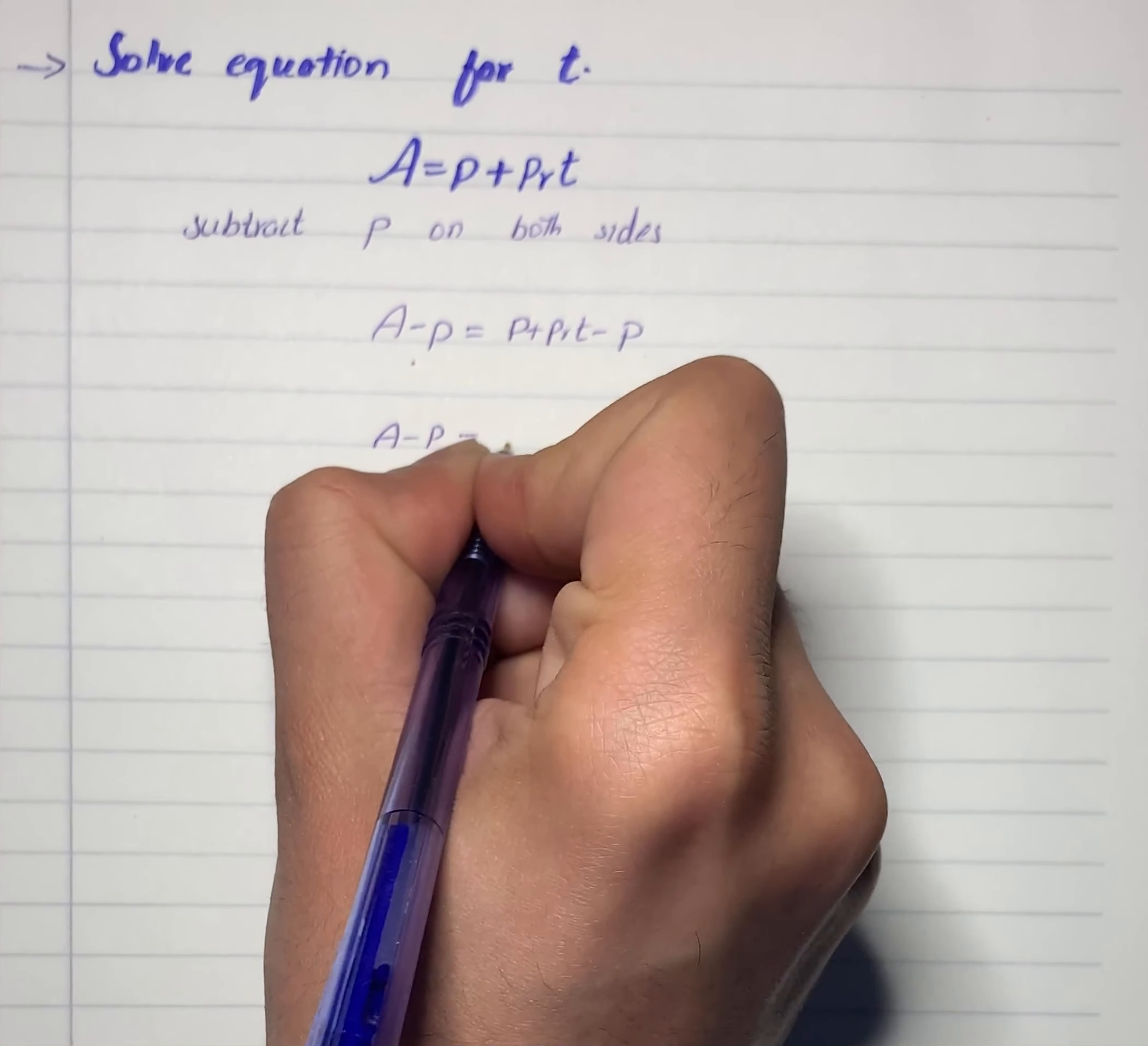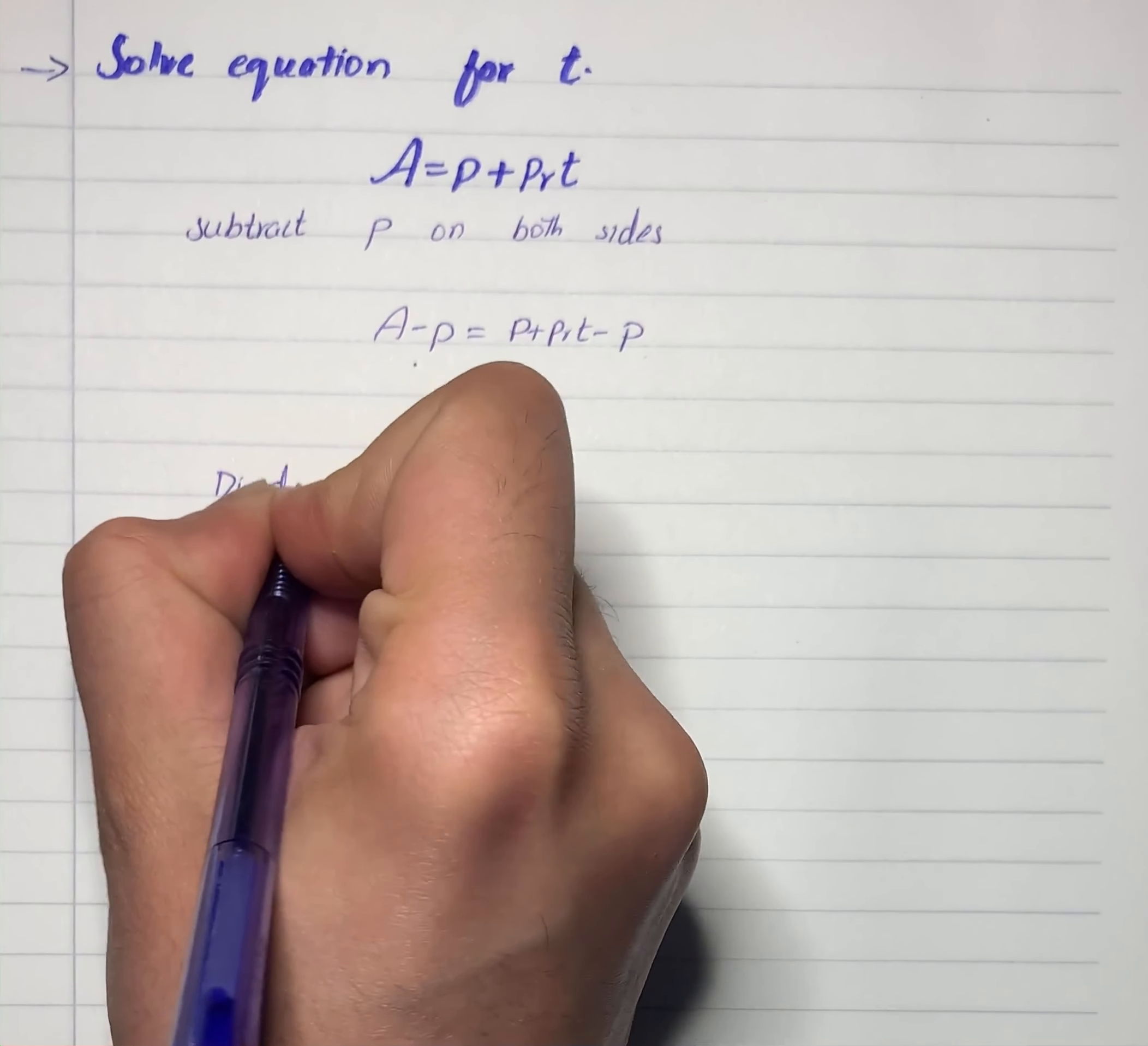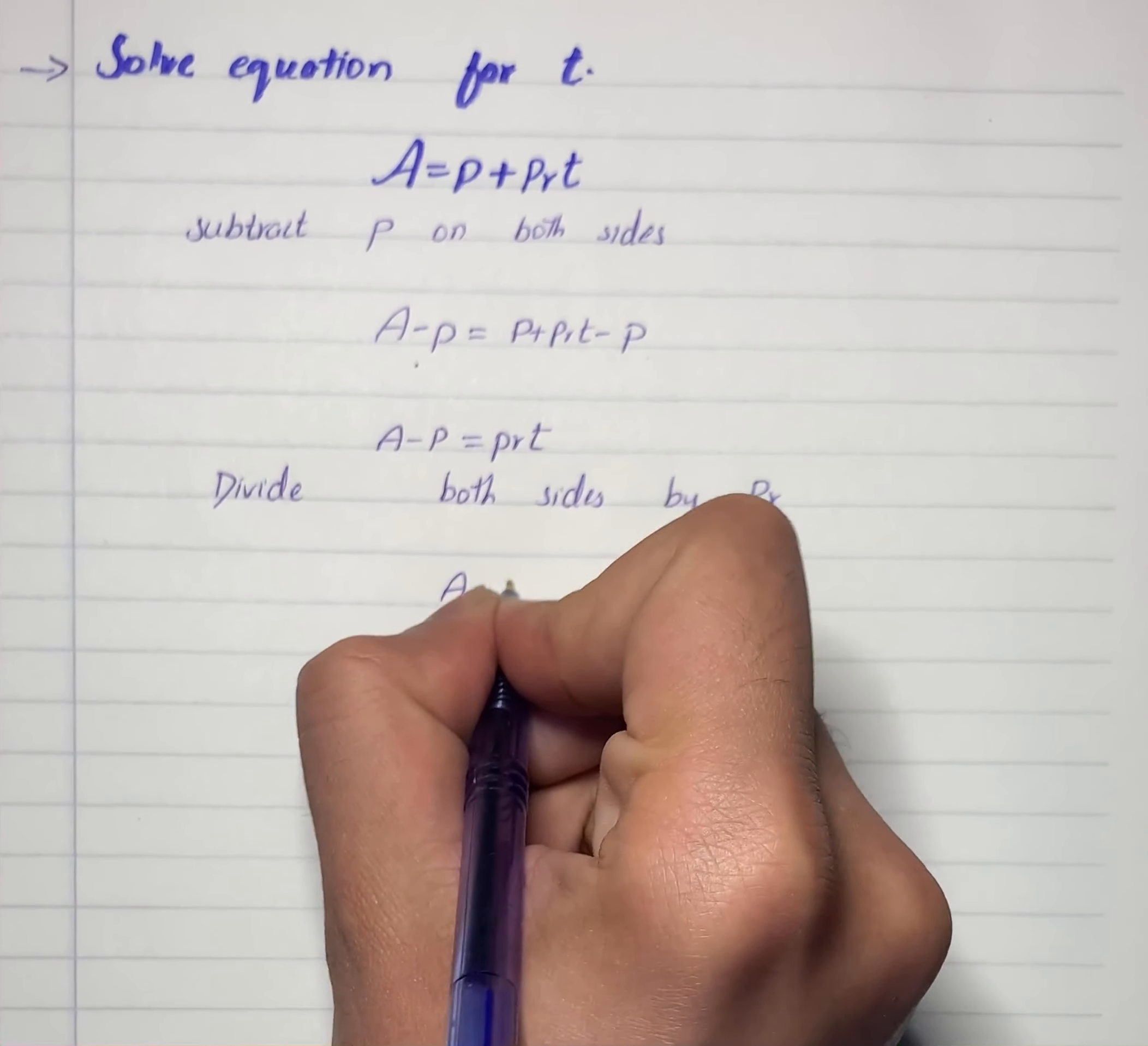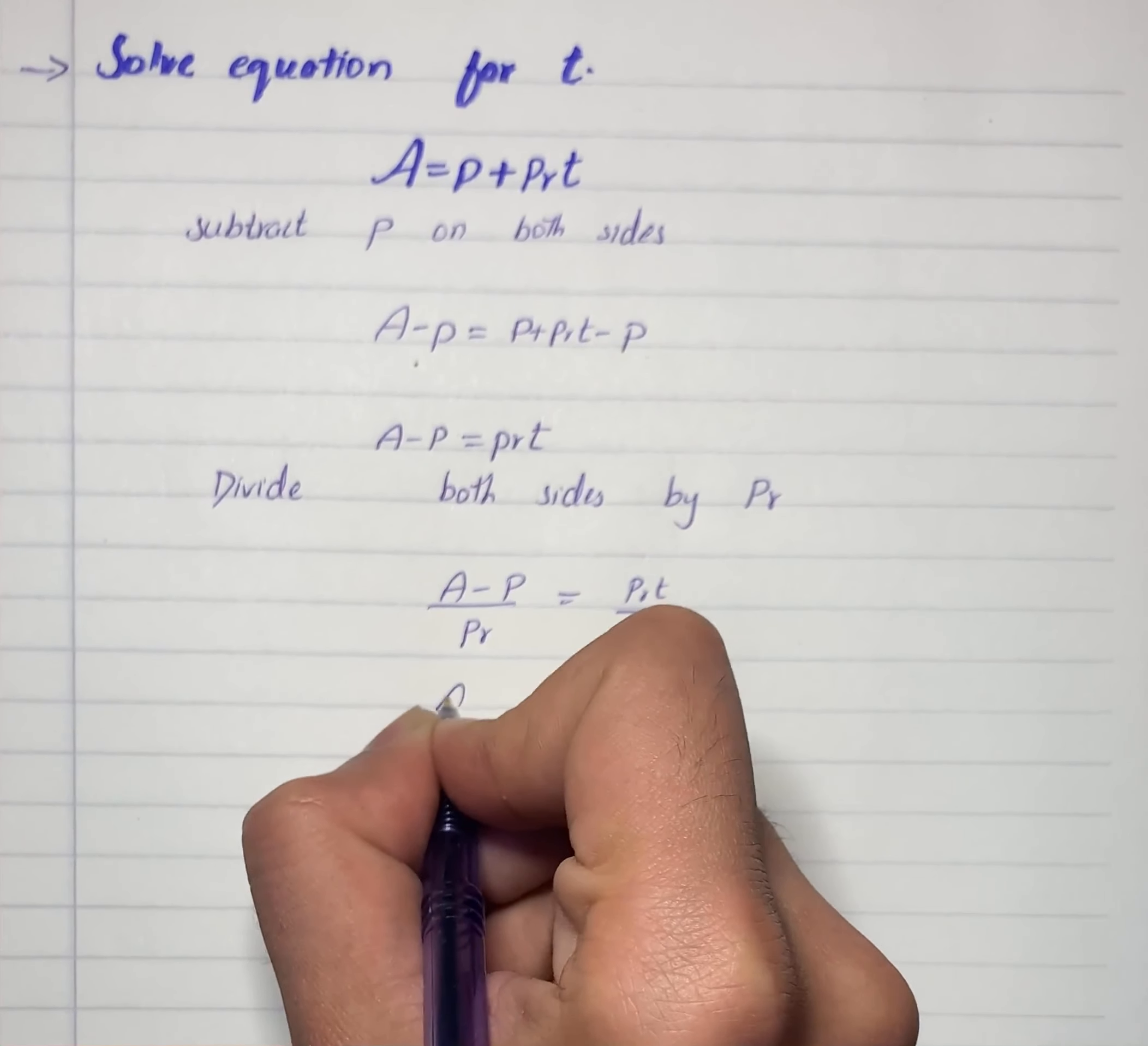We will divide both sides by PR. What it will give us: A minus P over PR equals PRT by PR. So A minus P by PR equals T.